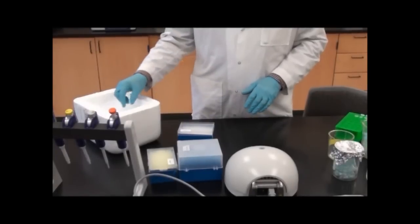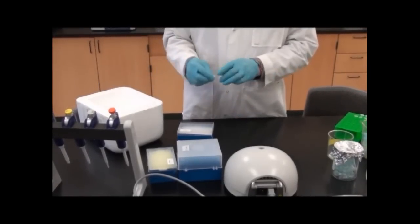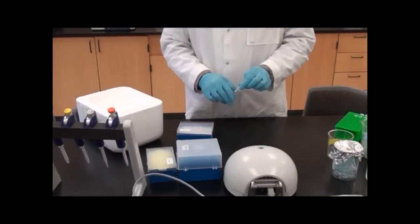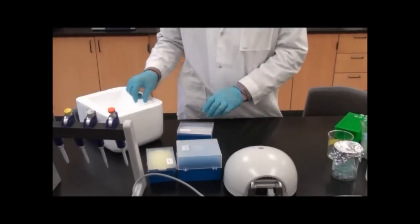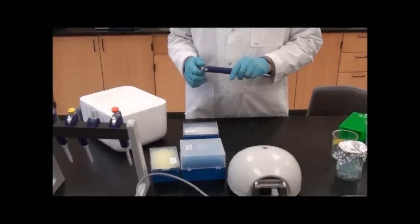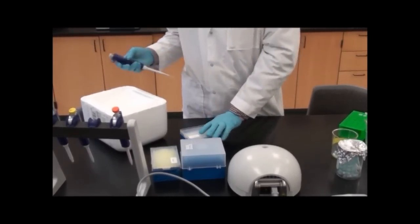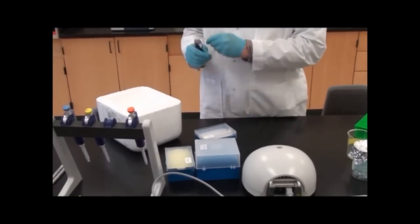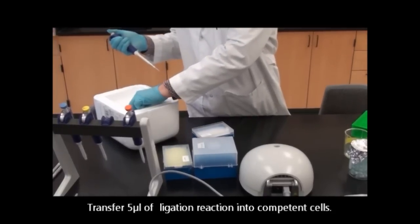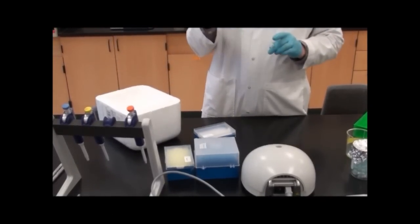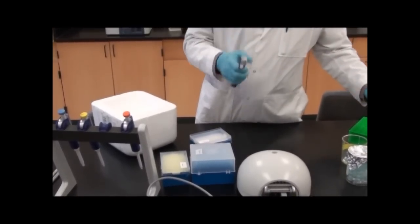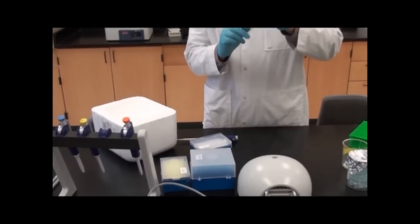Now we've allowed our cells to thaw a little bit. I can tell they're thawed by flicking and seeing that the liquid's moving. What I want to do is transfer my ligation reaction into the competent cells. I'm going to take about 5 microliters of my ligation reaction and transfer it into my competent cells.